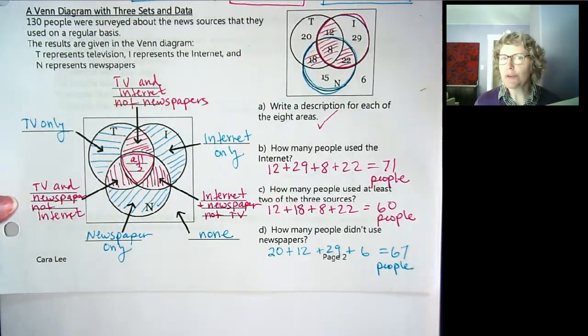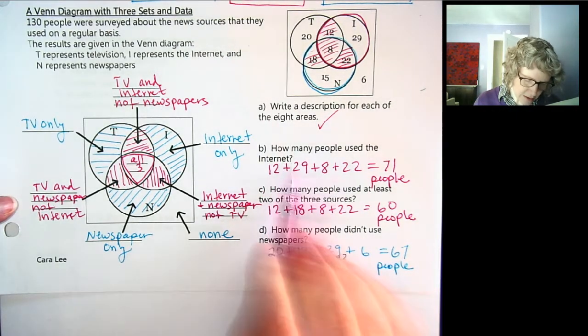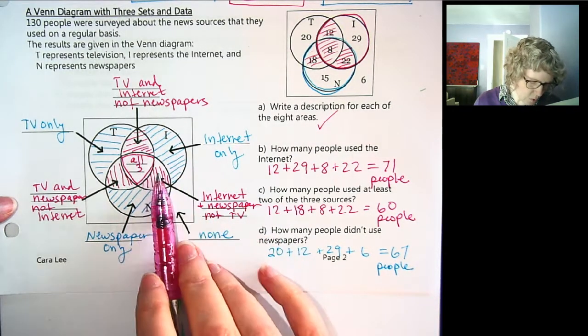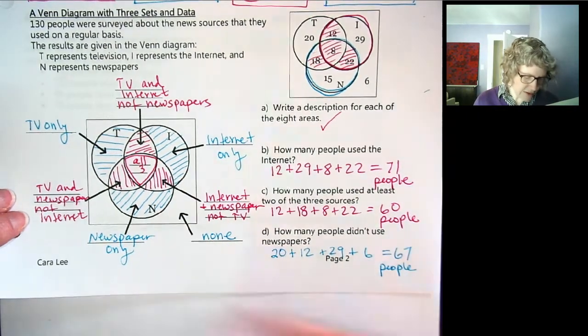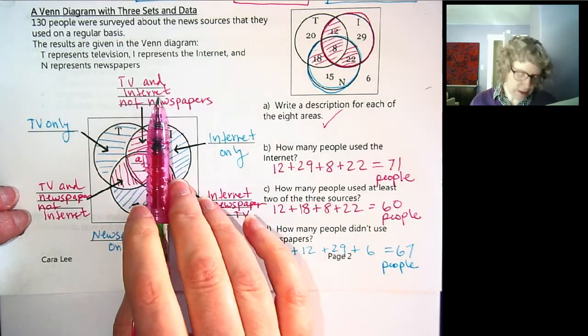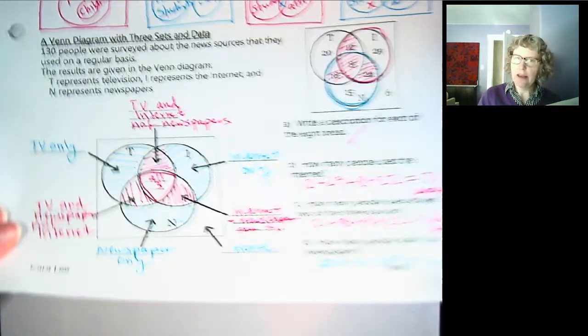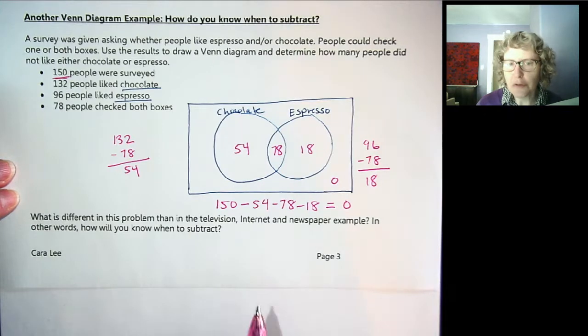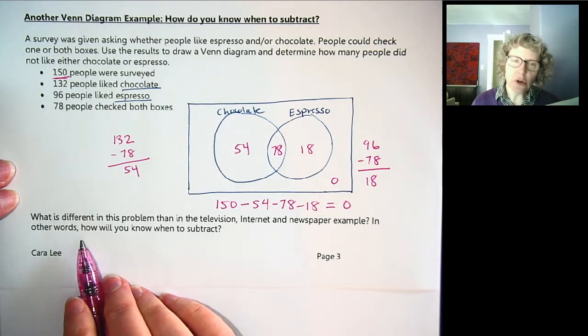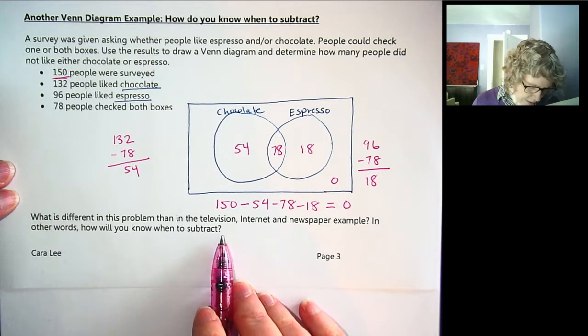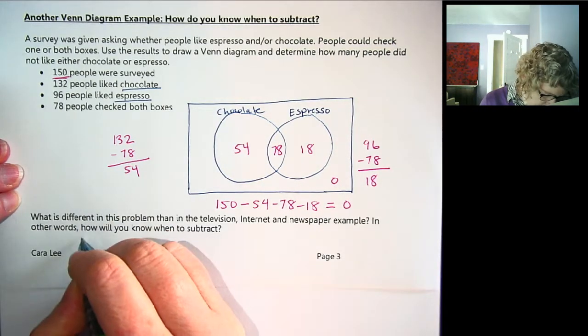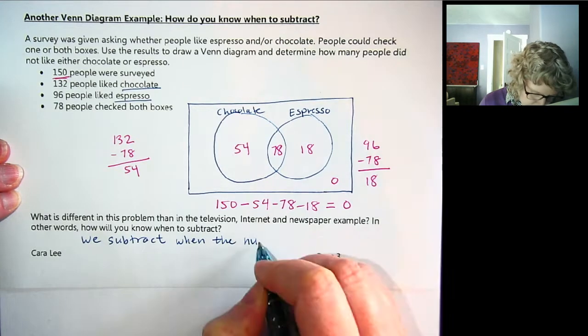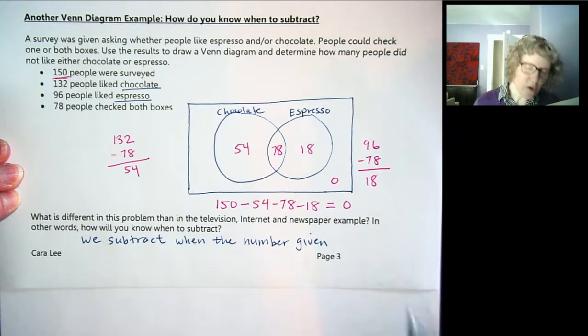So the wording, there's some very subtle wording in these questions to watch out for. If it says how many people use the internet, that is not talking about the other things, the TV and the newspaper. So that represents four regions in this case, one, two, three, four. Versus if it said like TV only, that's a single region, or TV and internet only is this single region right here. And then if it says how many people liked chocolate or espresso, we had to subtract because we had to take into account that intersection first. Okay, so let's see, you might want to write your own answer to this question. What's different in this problem? How will you know when to subtract? We subtract when the number given or a number given represents more than one region.